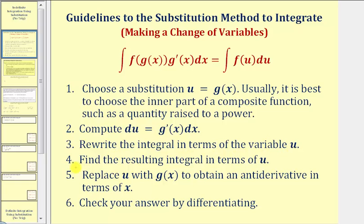Step four: find the resulting integral in terms of u. Step five: replace u with g of x to obtain an antiderivative in terms of x. And step six: we can always check our answer by differentiating.